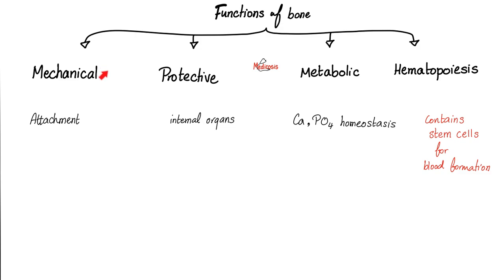What are the functions of bone? Mechanical — it provides attachment for muscles. Protective — the skeleton protects your internal organs. Metabolic — bones are full of calcium and phosphate. If your blood lacks calcium, you'll borrow some from bone; if your blood has too much, you'll lend calcium to the bones. And don't forget hematopoiesis — poiesis means synthesis or creation, hemato means blood. The bone marrow, which lies in the core of your bone, contains stem cells for blood formation.